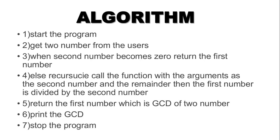Now we have to make the same recursive function. We can answer using the first and second numbers. The first number is the third number, the second number is the second number. We can do the same program and answer the same way.